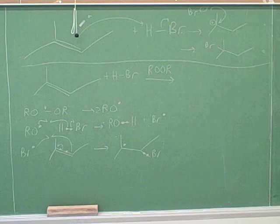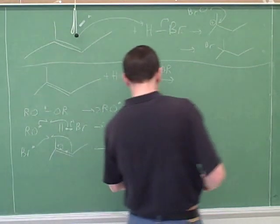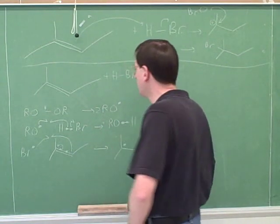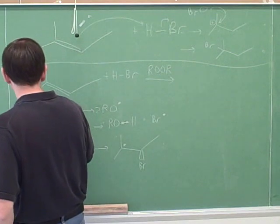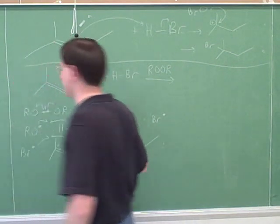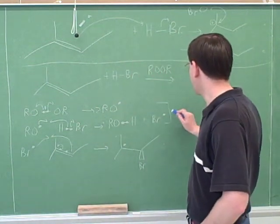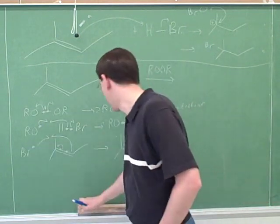That looks good. You remembered that mechanism well. I think you left out the electron-pushing arrows for the first step that show how we get the peroxides here. So we get the peroxides, then we generate the bromine radical. Remember, you can think of both of these together as two initiation steps.